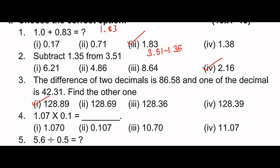Next: 1.07 into 0.1. Multiplying 1.07 by 0.1 — I have a total of 3 decimal digits. So I place the decimal point 3 digits from the right, giving 0.107. That is the answer.